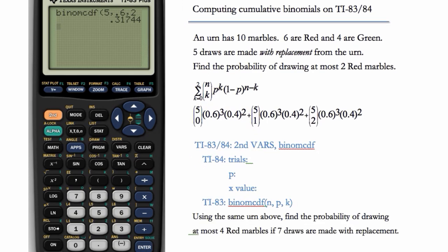Okay, now try this one on your calculator. Same urn, but find the probability of drawing at most four red marbles when seven draws are made with replacement.